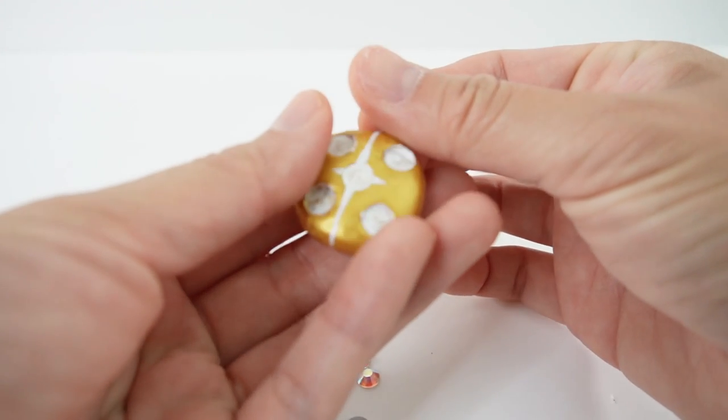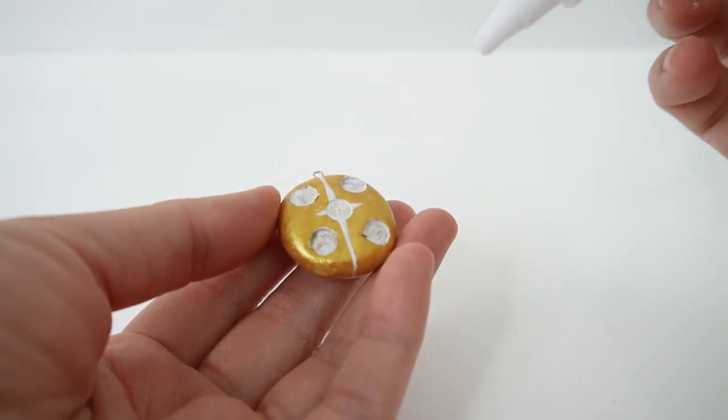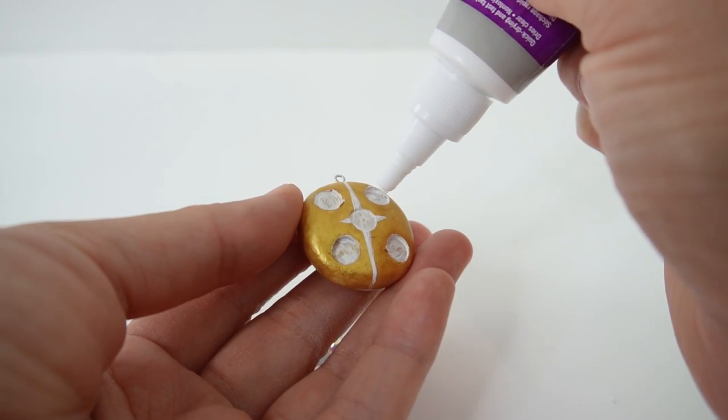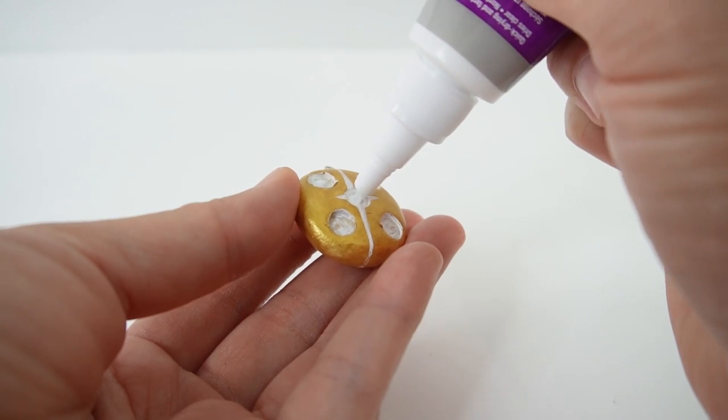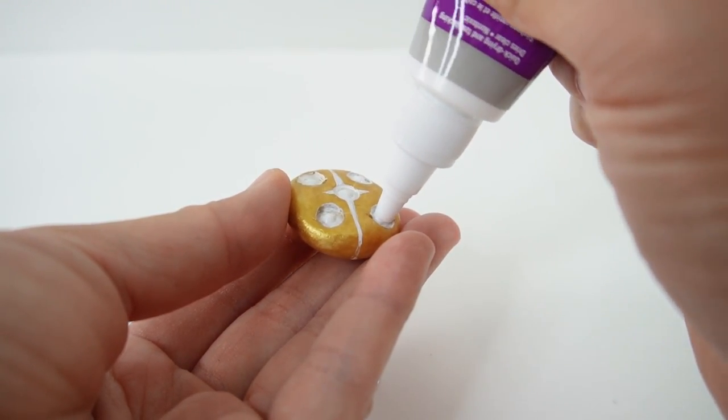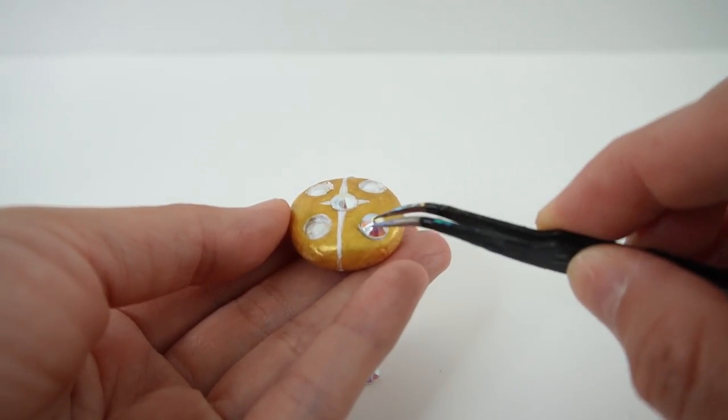All right, so the paint has dried. Now we're ready for the final step, the gems. So I'm going to put some tacky glue into each of these little spots here and we're going to put our gems in. Oh, this is a lot of fun. I feel like a jeweler.